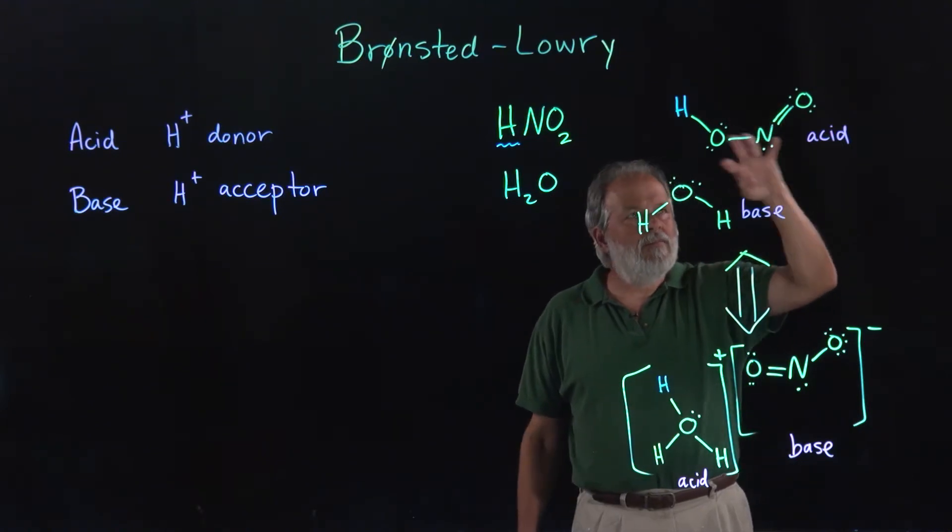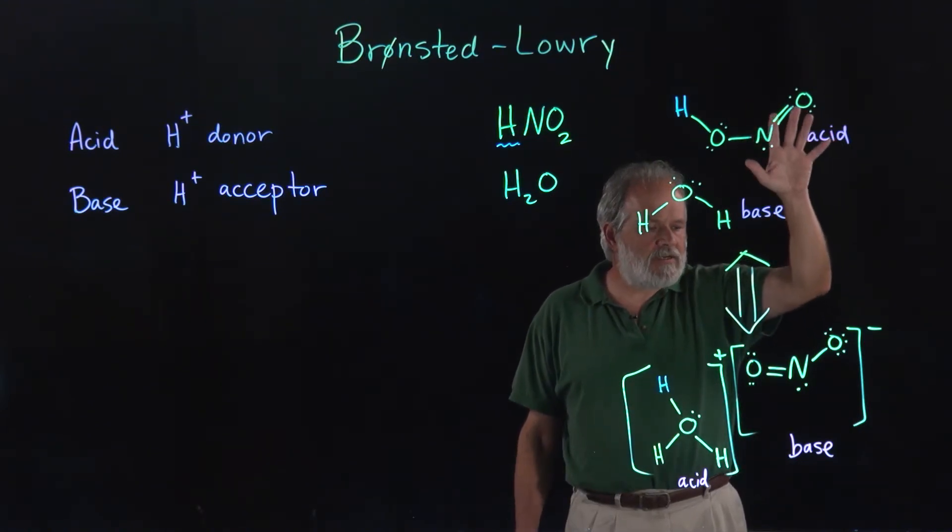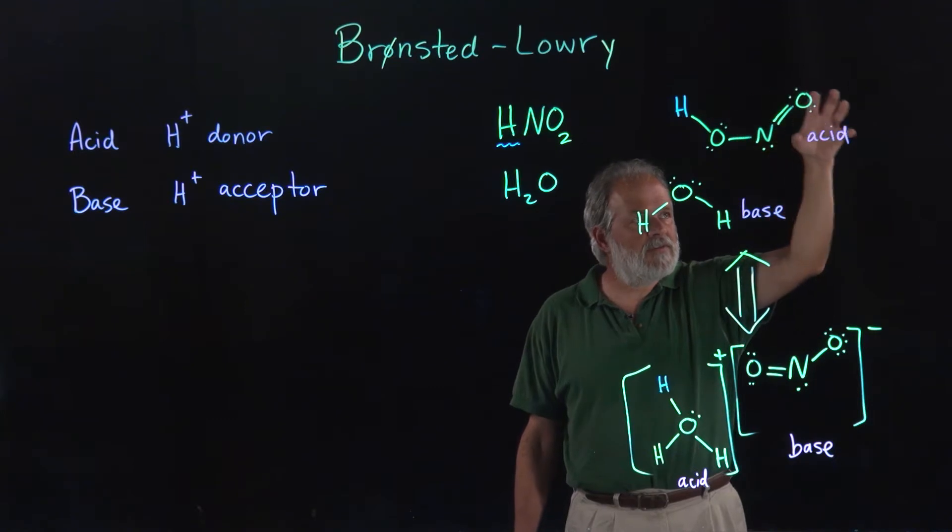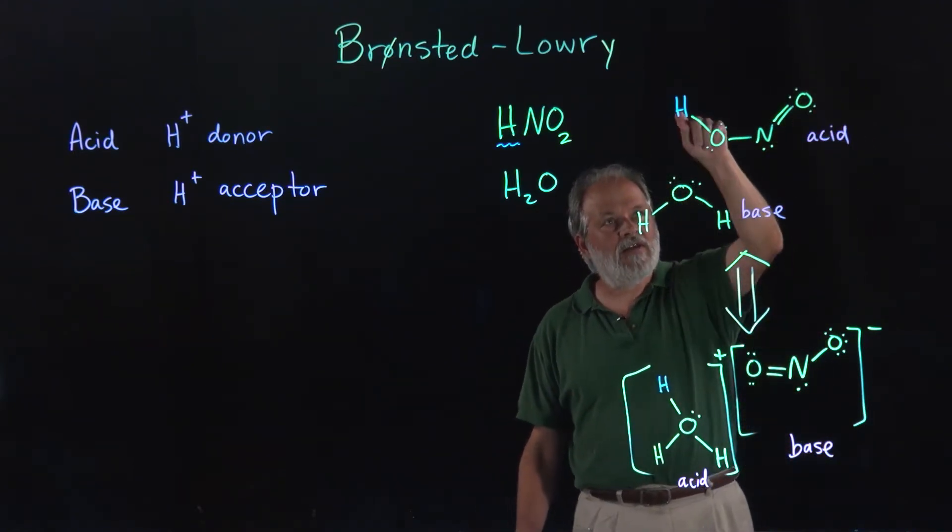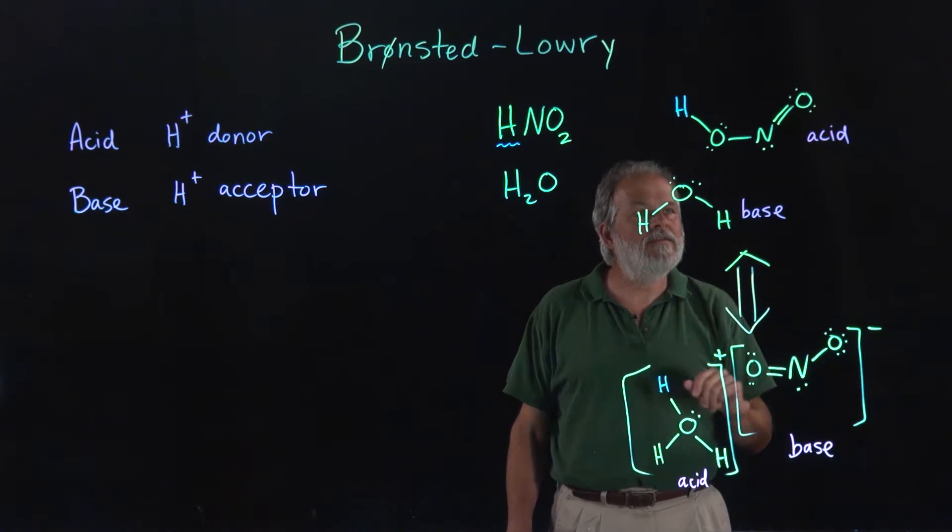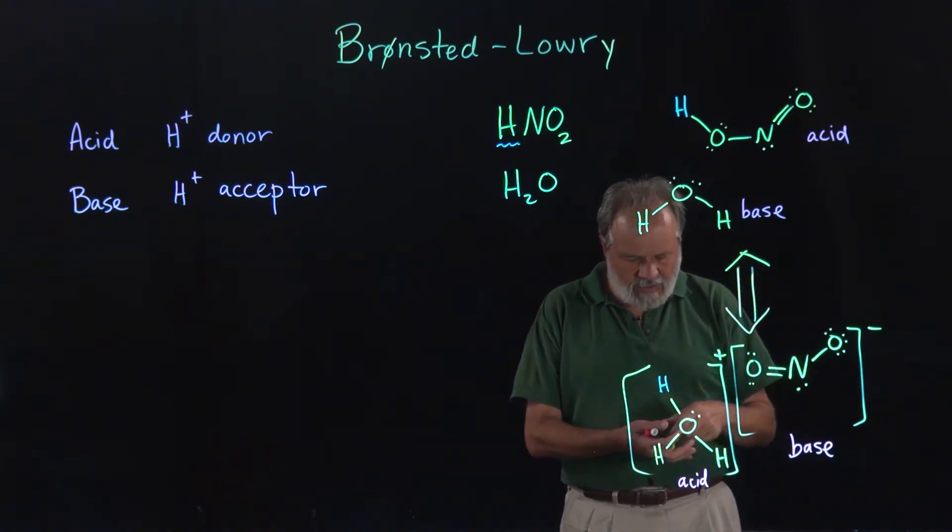And not only that, but when we look at the molecule with the nitrogen here, the only difference between this form that's called an acid and this form that's the base is whether the proton is on it or not on it. And so these are called conjugate pairs.